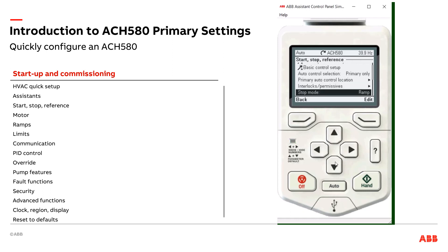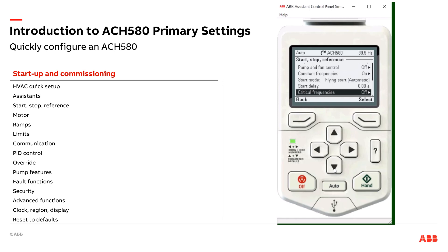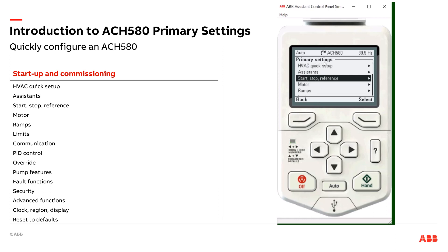My stop mode — am I going to ramp to a stop or coast to a stop? I'm ramping if I've got a pump application; I'm coasting to a stop if I've got a fan application. Constant frequencies are in here if I want to close a certain set of digital inputs to run at fixed speeds. My start mode — typically flying start is the way to go to catch a spinning motor. For a pump application, I could change that to ramp since I know I'm always starting at zero speed, but it doesn't hurt to leave it at flying start. I can program in start delays, and if my equipment vibrates at certain speeds I can program in critical frequencies — also known as skip frequencies. Skip frequencies aren't needed in 90% of scenarios, but some applications require it, which is why it's available in primary settings but not in the HVAC quick setup.